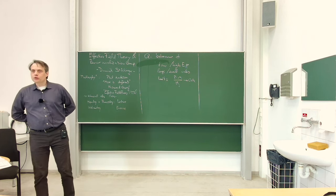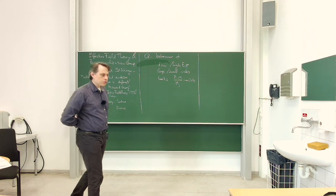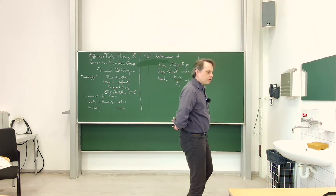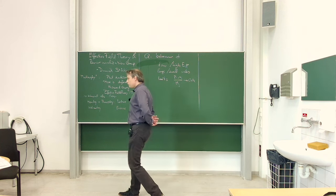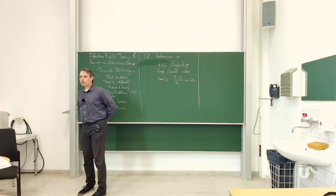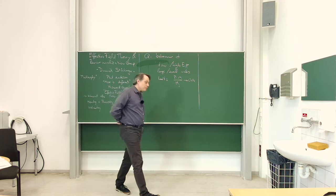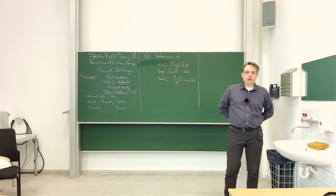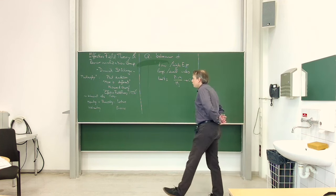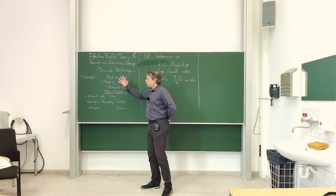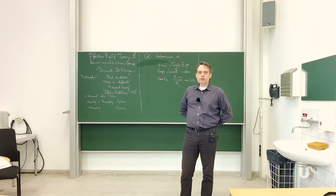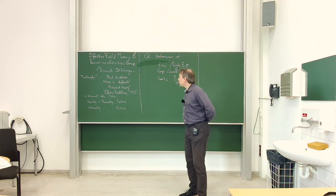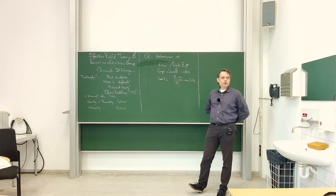Effective Field Theory and Renormalization Group are techniques and a set of tools — and actually not only a set of tools, but really a way to think about quantum field theory and renormalization, and actually even more than that, a way to think about all of physics. The set of tools we are going to describe has become very important in the last decades, both in condensed matter physics and in elementary particle physics, specifically in particle physics, which is our focus here.